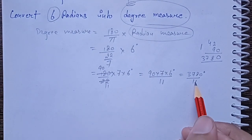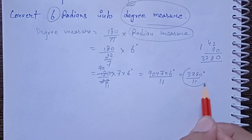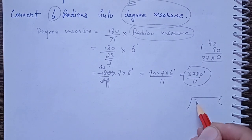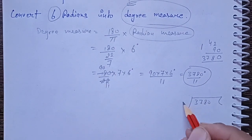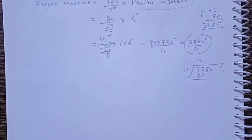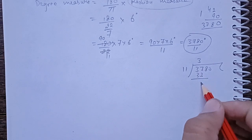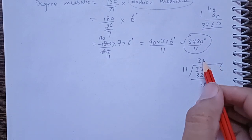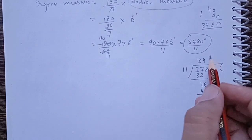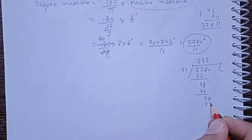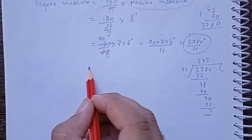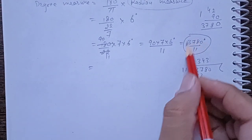The denominator is 11, so we have to solve the full value. Since there is no exact division, we divide: 3780 divided by 11. Performing the division: 33 goes in, remainder 48, then 44, remainder 40, then 33 — giving quotient 343 with remainder 7.